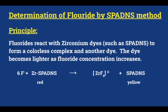Next is determination of fluoride by the SPADNS method. Fluoride ions are present in water because significant sources of fluorides include natural deposits, coke, glass and ceramic industries, steel and aluminium processing, and electroplating industries. Low concentration of fluoride provides protection against tooth decay, but if the fluoride ion concentration is more it can have an adverse effect on tooth enamel and can give rise to dental fluorosis. Elevated fluoride intake can also cause serious effects on skeletal tissues.